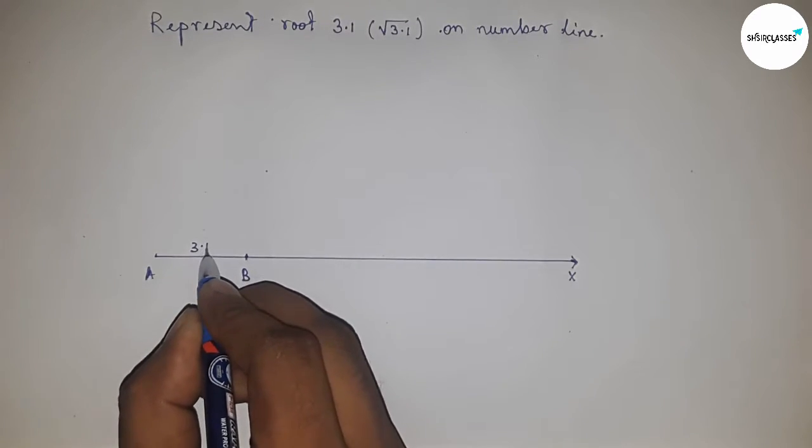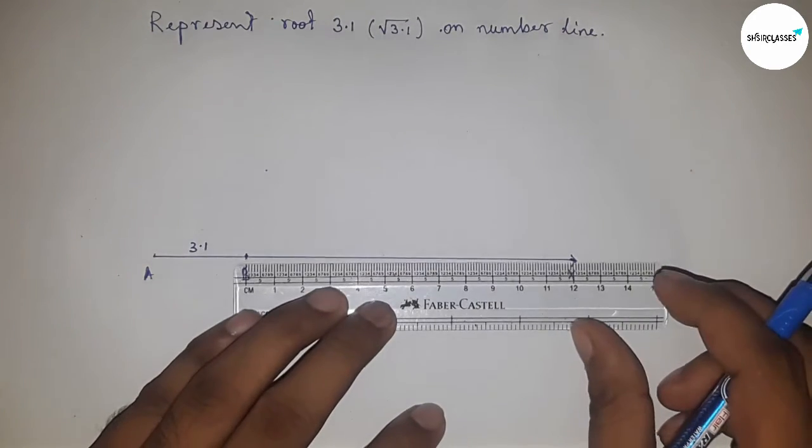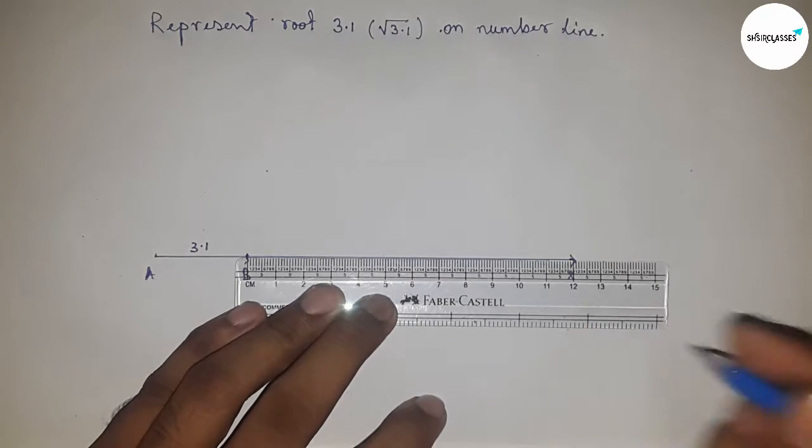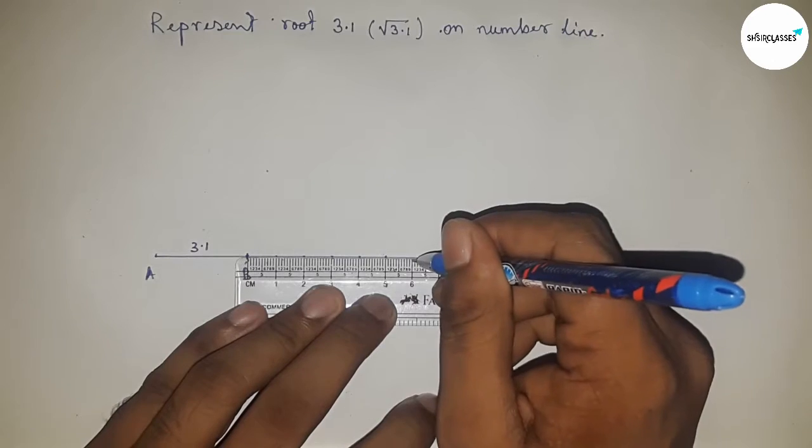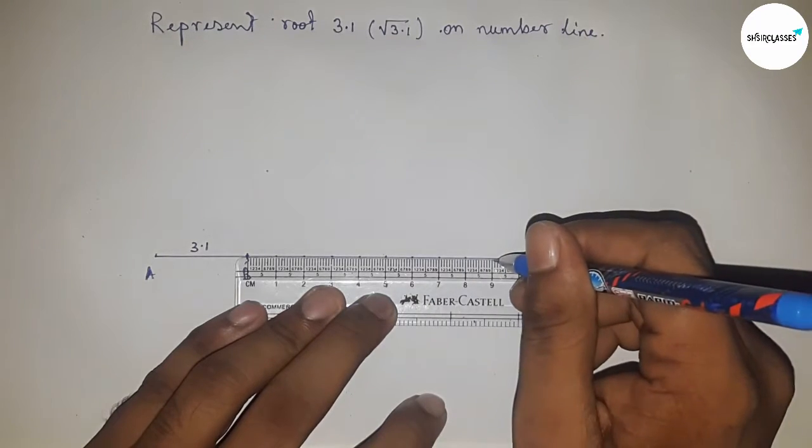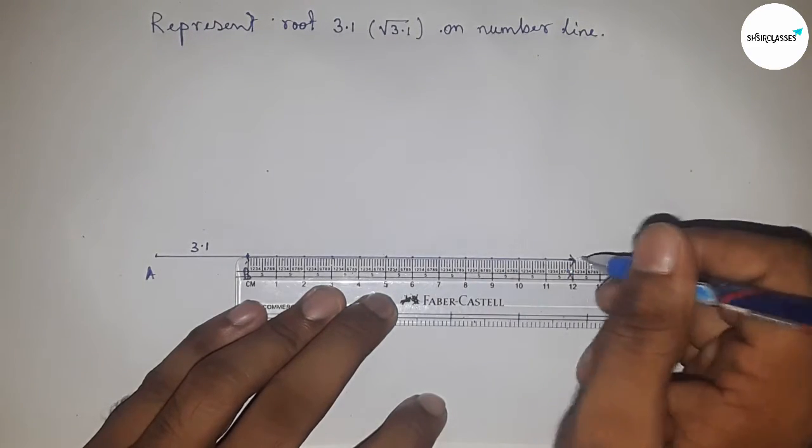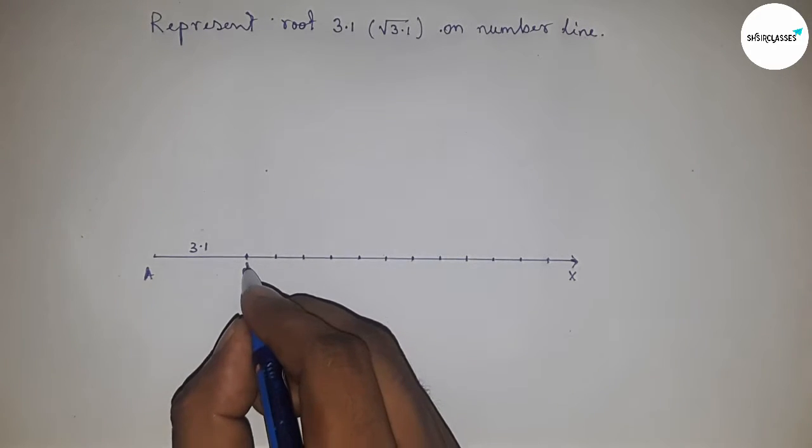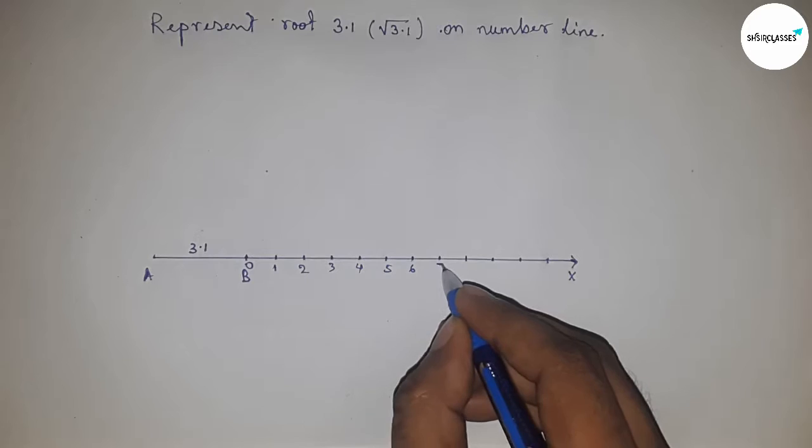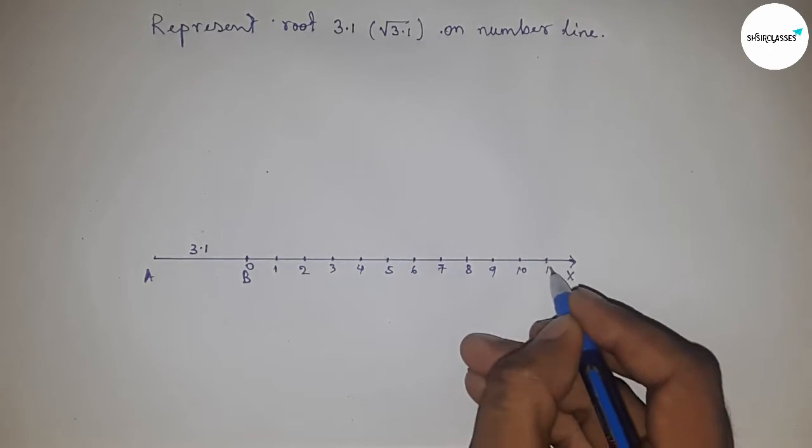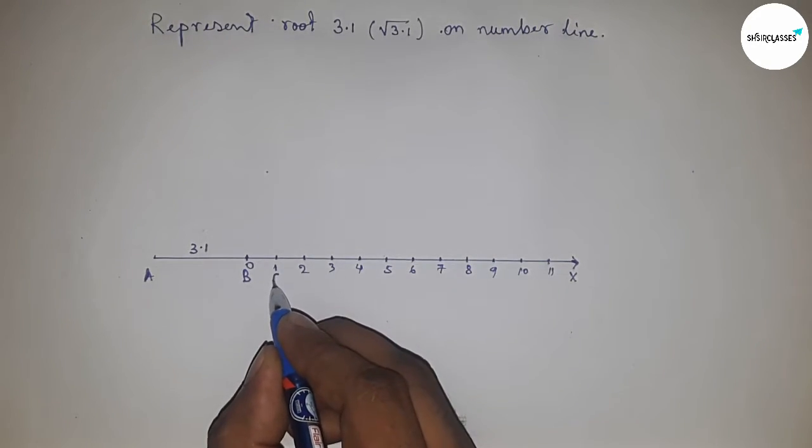Next, we have to mark the numbers on the line from B to X using a scale, marking the numbers this way. Mark the starting numbers: zero, one, two, three, four, five, and so on. Mark this as point C.